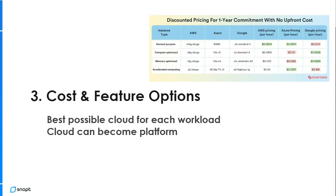The next benefit is cost and feature options — using the best possible cloud for each workload. It's talking about using the most optimal solution for each problem, which is typically your applications. An application can be a SQL database, a key-value store, a bunch of web servers, or serverless. No one cloud is cheaper than the others — it depends on what you need, what instance size you're launching, what services you need to consume. If you have a truly multi-cloud application delivery strategy, there's no reason why you can't always be deployed in the cheapest cloud.